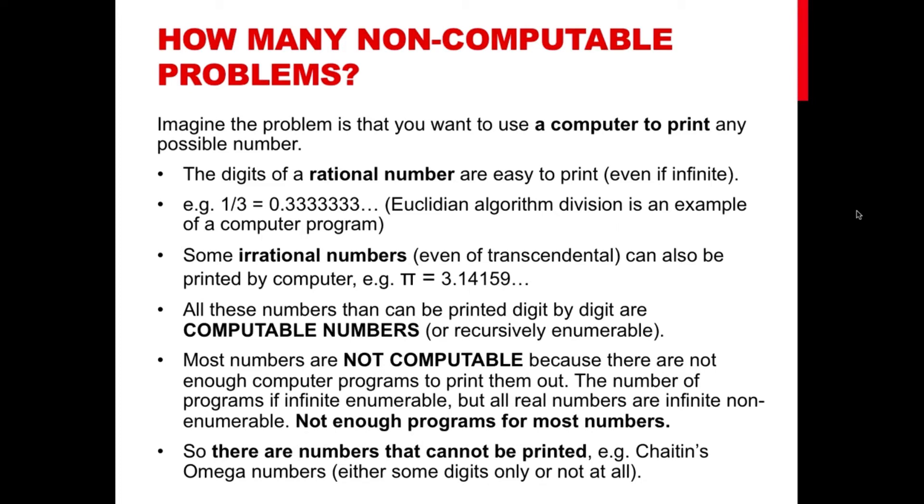However, most numbers are not of this type. For most irrational numbers, there is no formula to generate their digits, not only because we don't know the formula, but because the formula does not exist. The way to see this is by thinking of enumerating all possible programs. So you know that, for example, all computer programs in our digital computers are stored in a computer in binary.